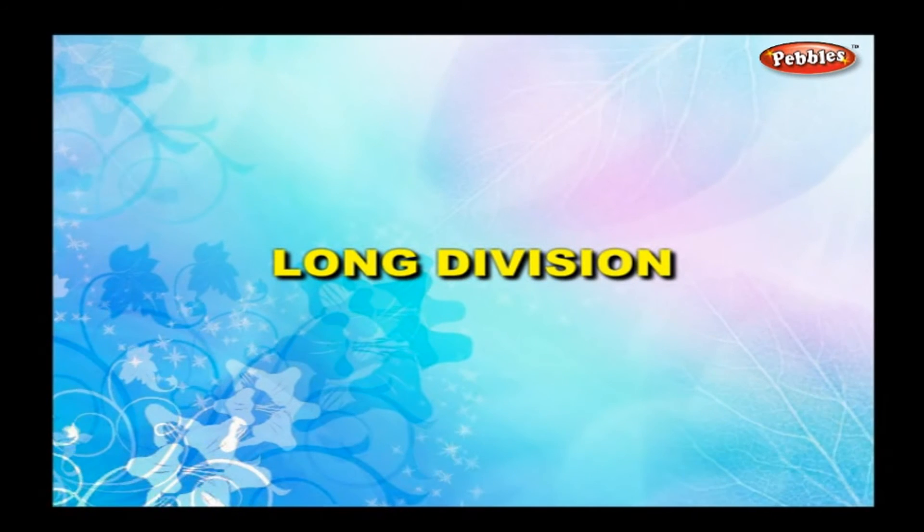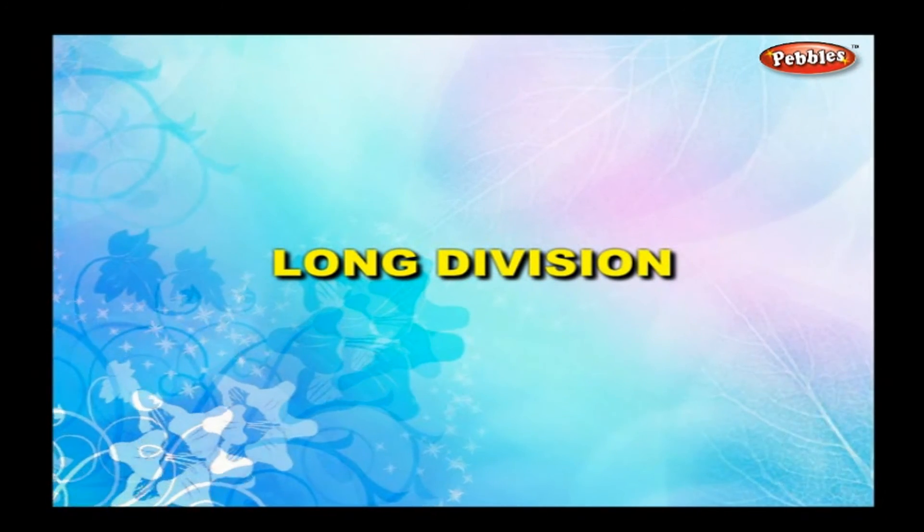Long division. Example: Divide 648 by 2. Step 1: Arrange the numerals below in the place value order. Step 2: Divide 600s by 2. 6 hundredths divided by 2 is equal to 300.